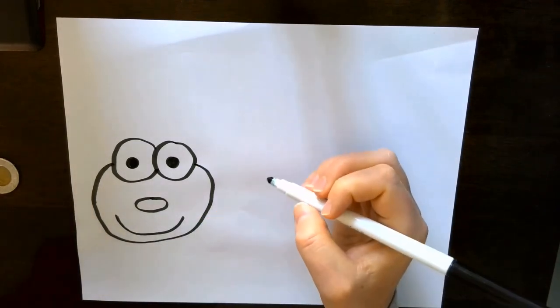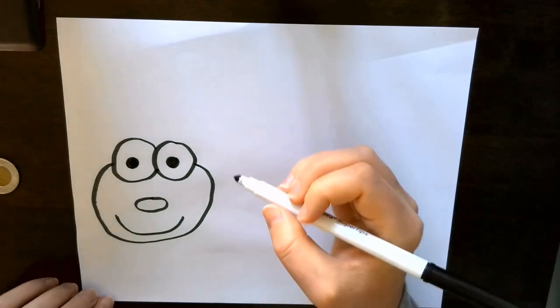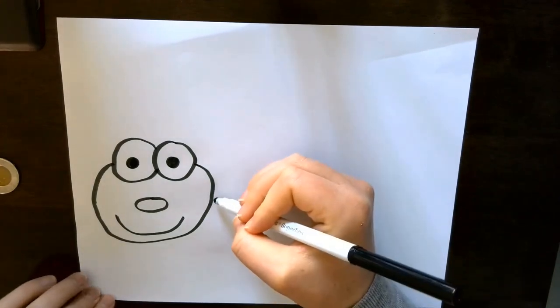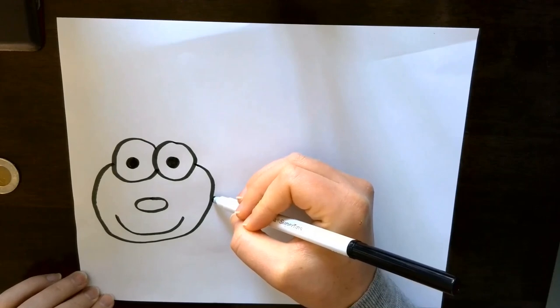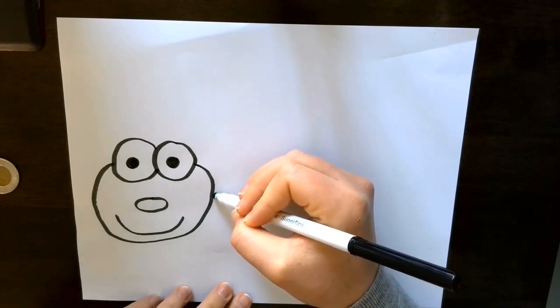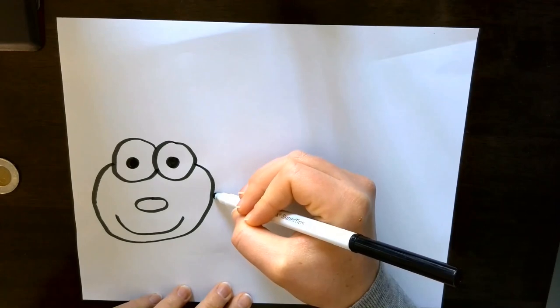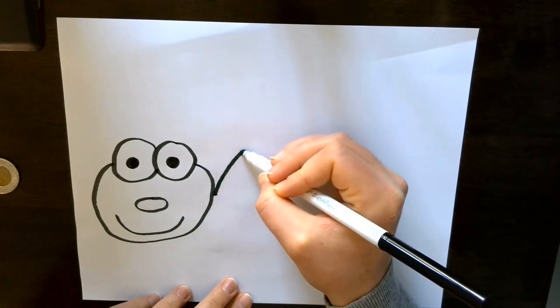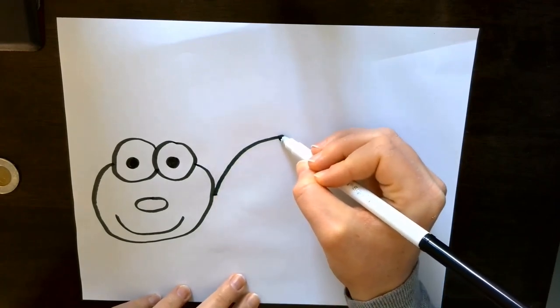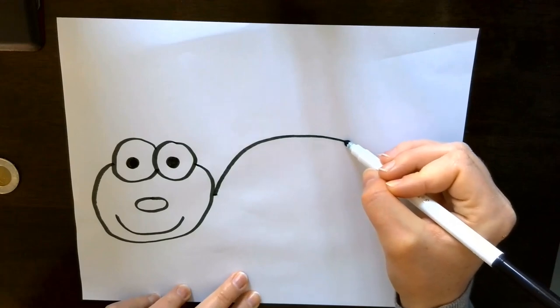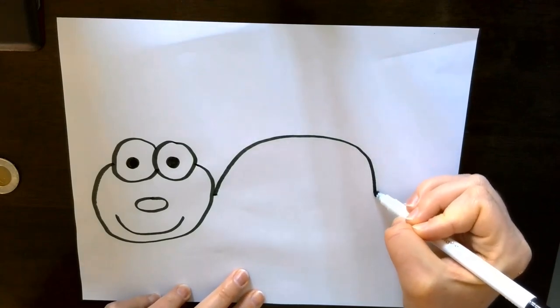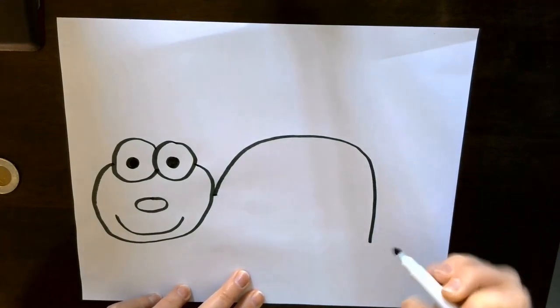All right, now for the ladybug's shell, we're going to start halfway up at the side of its face and it'll be like an upside down letter U. So we'll reach up to about where the tops of the eyes are. Around, we'll want it to be nice and big so that we have lots of space to add our spots.